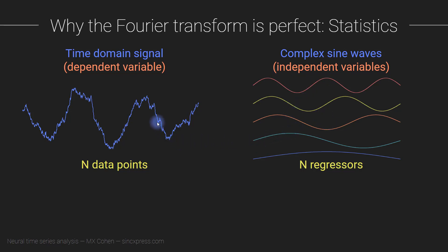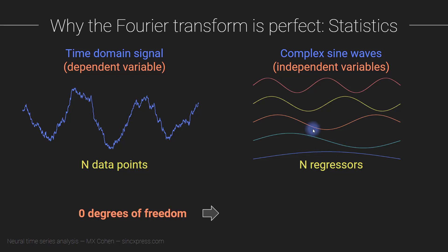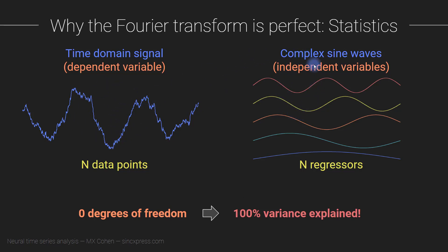If you are trying to build a multiple regression model where you are trying to explain variance of N data points based on N independent variables, the question is: how many degrees of freedom do you have, and how much of the variance in the dependent variable do you account for with N regressors? The answer is that you end up with 0 degrees of freedom, because you have the same number of predictors as data points. So you necessarily explain 100% of the variance — there is no residual variance in the dependent variable.